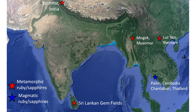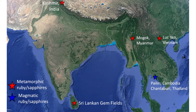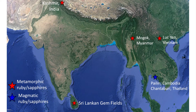Geologists make two broad distinctions between metamorphic and magmatic sapphires and rubies. The metamorphic type are those that grew during ancient mountain building events, or orogenic events, during times when continents collided due to the movement of the Earth's tectonic plates. The heat and pressure experienced by geological formations during these events facilitated the crystallization of gem-quality corundum. Metamorphic sapphire and ruby deposits include those in East Africa, Sri Lanka, India, and Myanmar. This map shows some of the ruby and sapphire deposits in Asia, which are mostly metamorphic deposits.